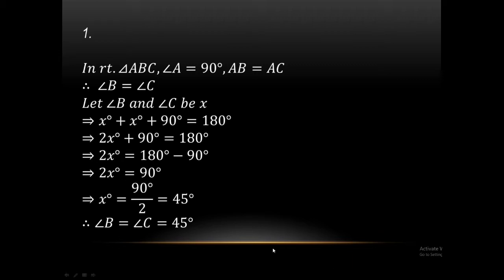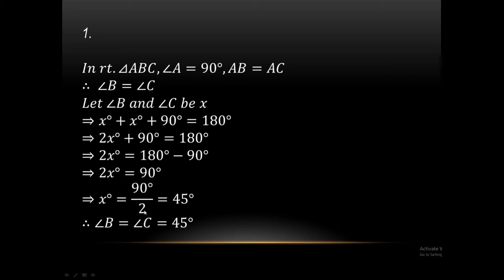Question number one answer. Right triangle ABC, angle A is 90 degrees. AB equals AC. So angle B and angle C are equal — let angle C equal x. Then x plus x plus 90 degrees equals 180 degrees. 2x plus 90 equals 180, so 2x equals 90, x equals 45 degrees.